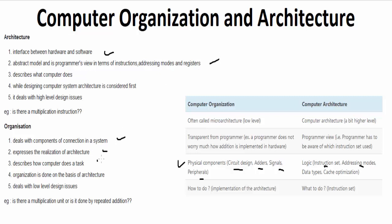Computer architecture will design whether a computer will have a multiplying instruction or not, whether it will use it or not. Architecture deals with high-level design issues, whereas organization deals with low-level machine-level issues.